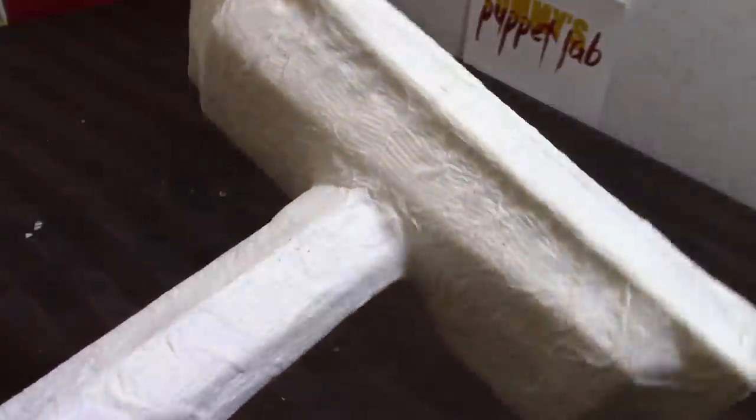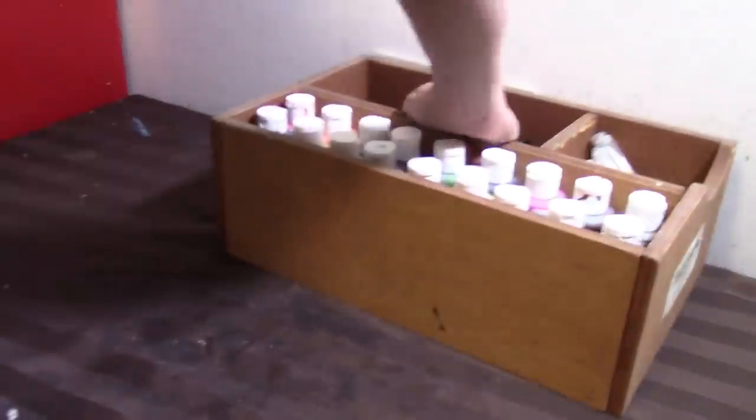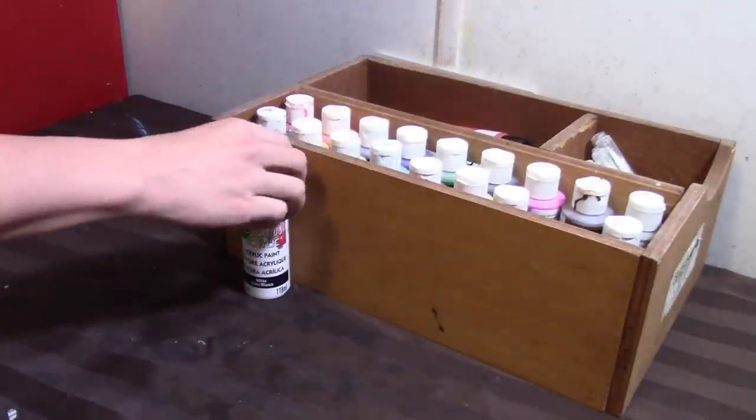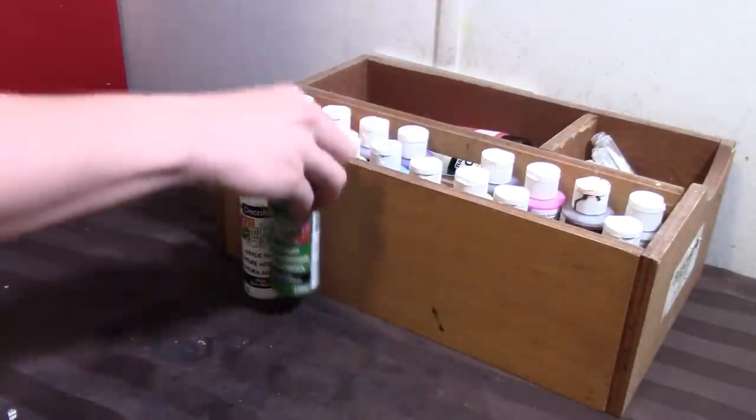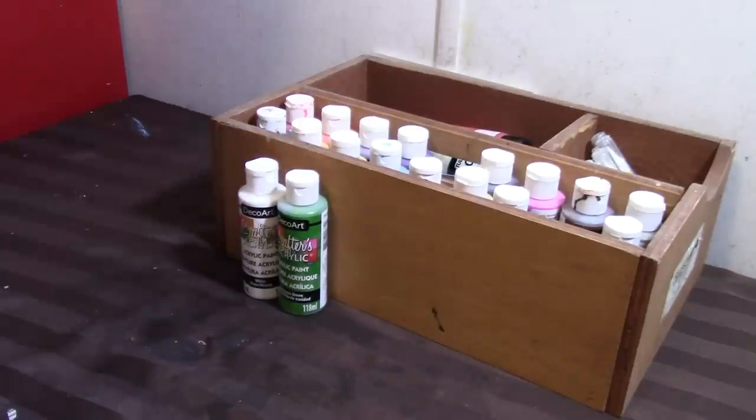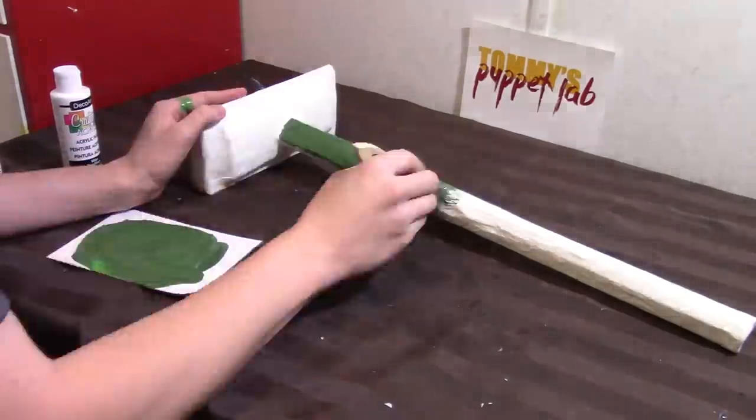Alright, so let's start painting. Okay everybody, it's time to start painting. And the only colors we're going to need is white and green. I'm going to paint the handle green and of course the broom head white. So let's get started. Looks like it's painting time.